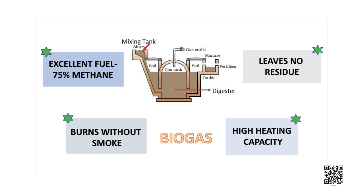Biogas is an excellent fuel as it contains up to 75% methane. It burns without smoke, leaves no residue like ash from wood, charcoal, and coal burning, and its heating capacity is high. Biogas is also used for lighting. The slurry which is left behind is removed periodically and used as an excellent manure because it is rich in nitrogen and phosphorus.